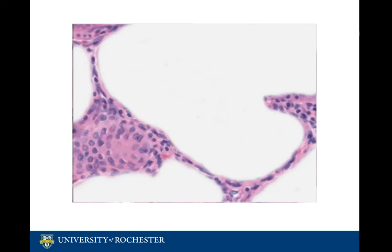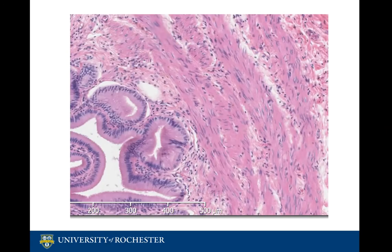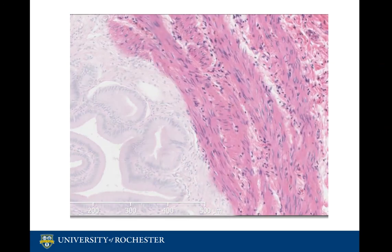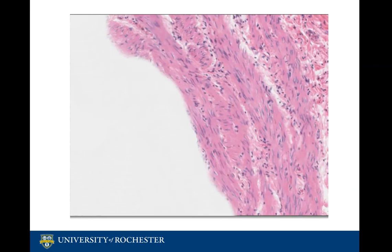Unlike the majority of the GI tract, there is no submucosa present between the lamina propria and the next layer, the muscularis propria. This muscular layer of the gallbladder is made up of oblique, circular, and longitudinal smooth muscle fibers layered in an indistinct pattern.